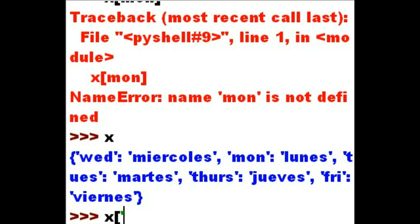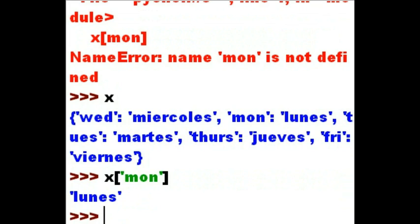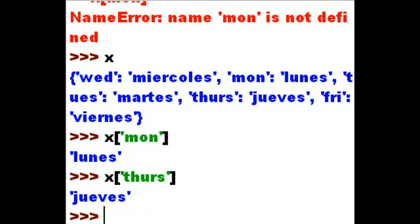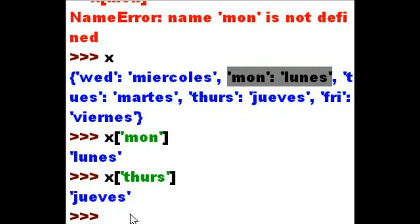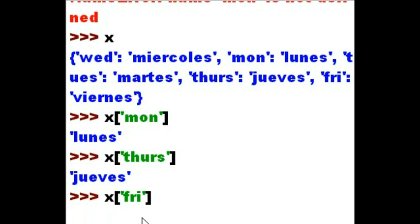So X, square brackets, single quote, and the key value is 'Monday'. When I hit enter, I'm going to get its equivalent value, which is Lunes. So Monday relates to Lunes. Just like Thursday — the Thursday key relates to the Jueves value. And I get Jueves. Just like so. As you can see up here, Thursday is mapped to Jueves, Monday is mapped to Lunes. And if I key in X and single quote 'Friday', I'm going to get Viernes — and I do.